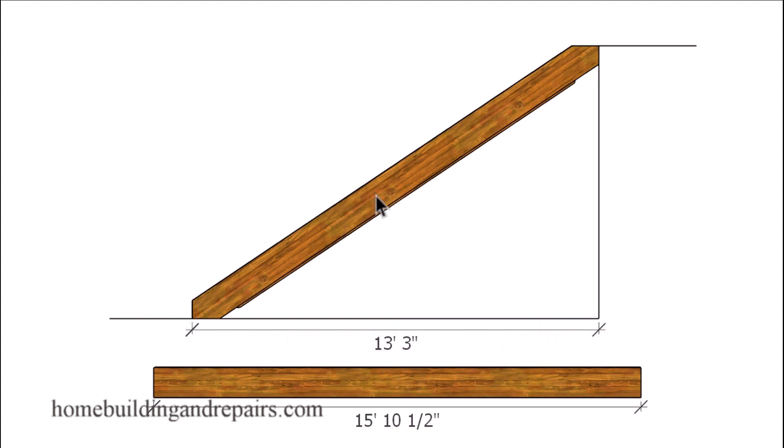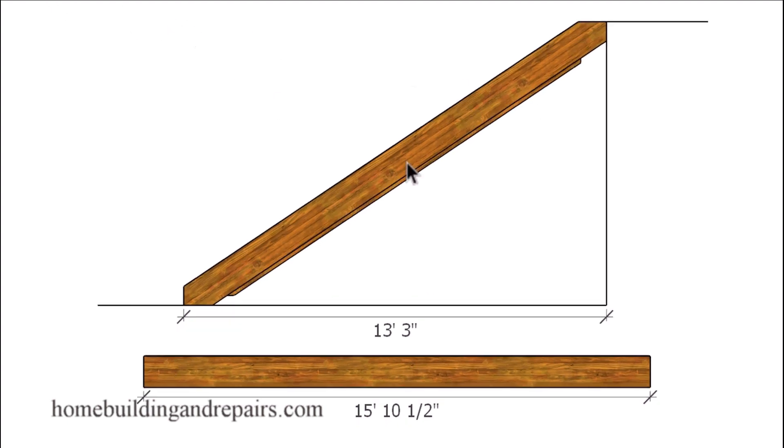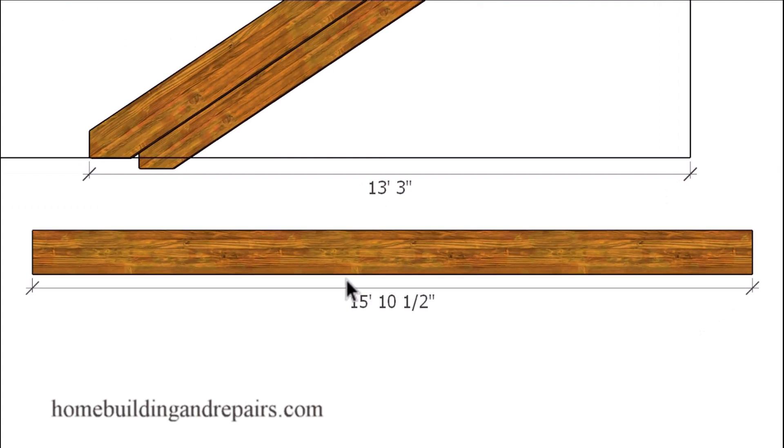To calculate the actual length of the stair stringer you're going to need to do a little math. I do have another video on that and I will put a link in the video description box. The actual length of the stair stringer in this example with a 7 inch individual riser for each step is going to be just under 16 feet.